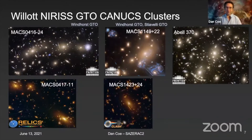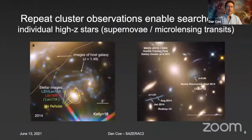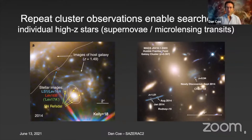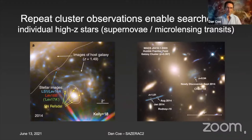CANUCKS is observing five of these clusters with NIRSpec to get spectroscopy. Some of these clusters are being observed by the same program at multiple epochs, which is great because they enable searches for transients, which include individual stars at high redshifts. We might find supernovae or microlensing transits of individual stars within the first billion years, which would be very exciting. So far we see a few examples of individual stars observed around redshifts of 1.